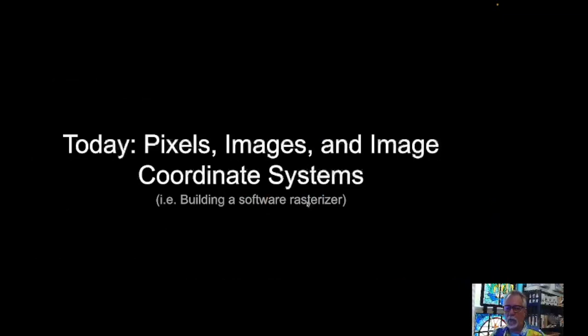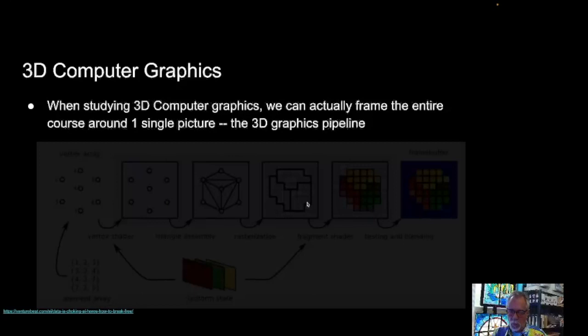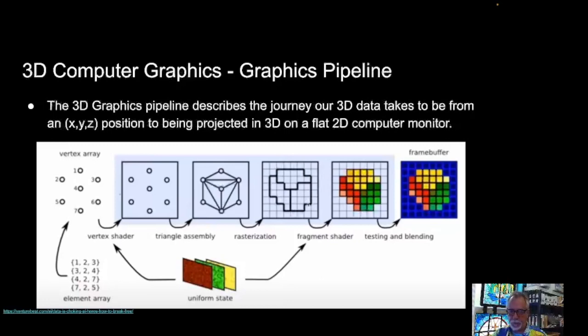Today we're going to talk about pixels, images, and image coordinate systems. This entire course is about making one image. Of course, we're going to do it many, many times, so we can have animation and stuff like that. But really, if you want to take something away from this course, take away the idea that we're taking a bunch of geometric data and generating an image, then coloring that image such that we have beautiful rendered images. We're going to start with a bunch of points that define triangles, push them onto the screen, fill those with colors, and handle transparency and so on.